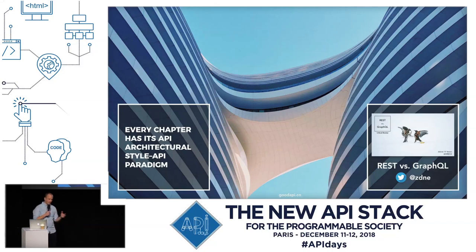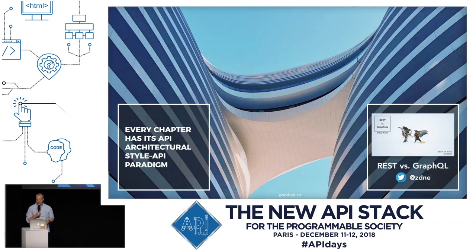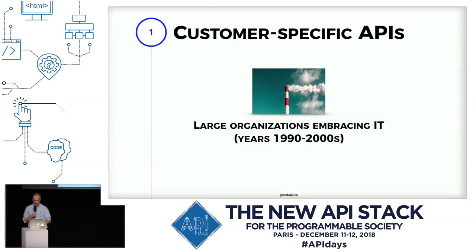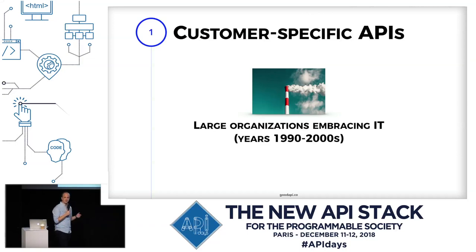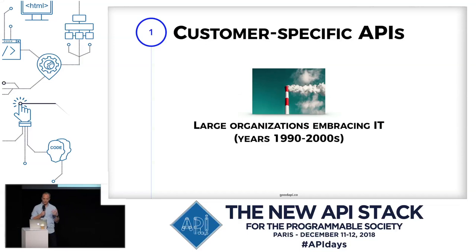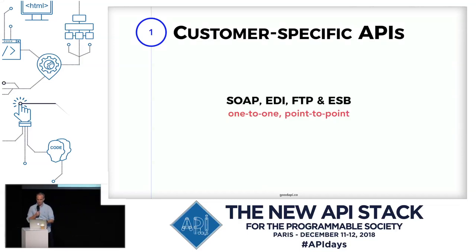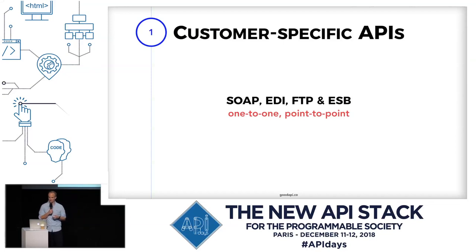The architectural styles you use depend on the era you're in. Recently, there are heated discussions about REST and GraphQL — go check out my Twitter for videos and materials on that. But back to the chapters of APIs: we started some 30 years ago when large enterprises were embracing IT for internal operations or collaboration with big partners. The first APIs emerged — mostly EDI, FTP, and later SOAP web services and enterprise service bus.